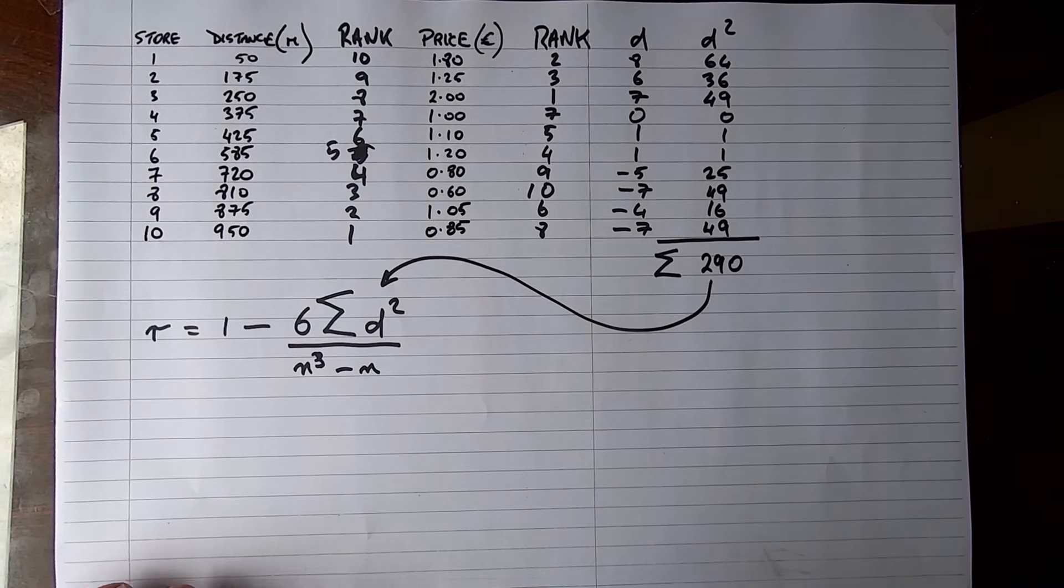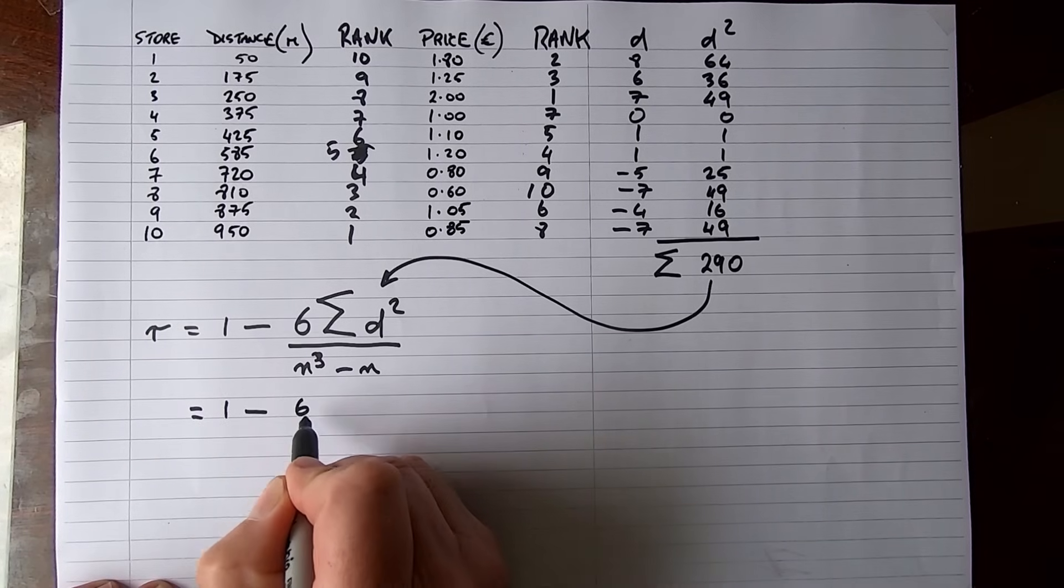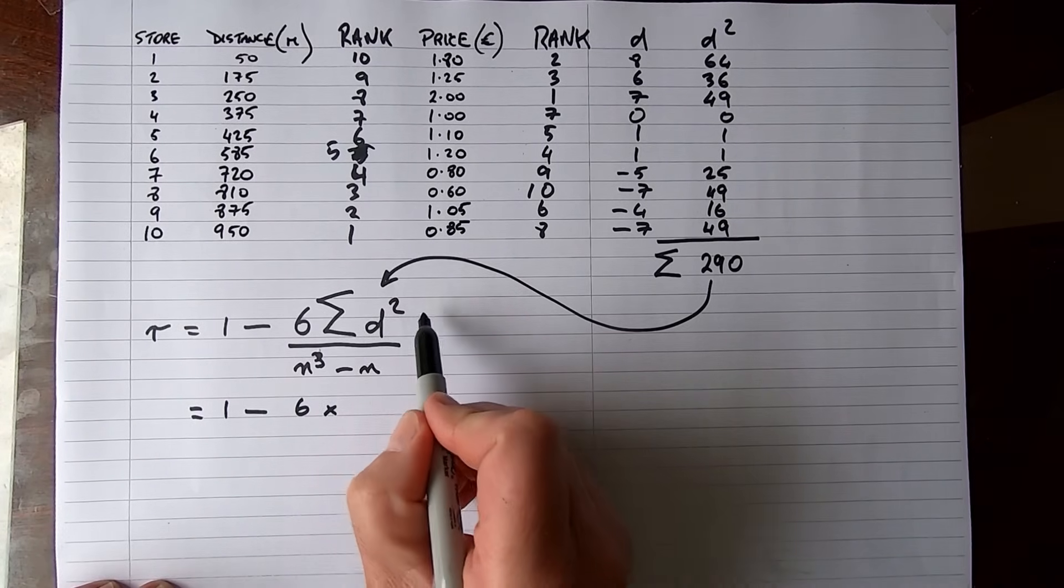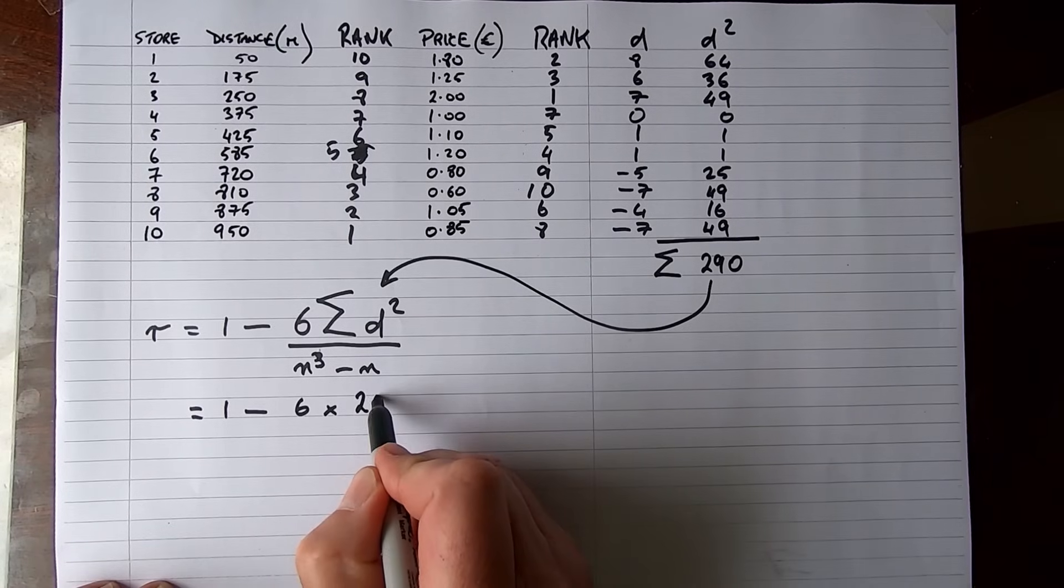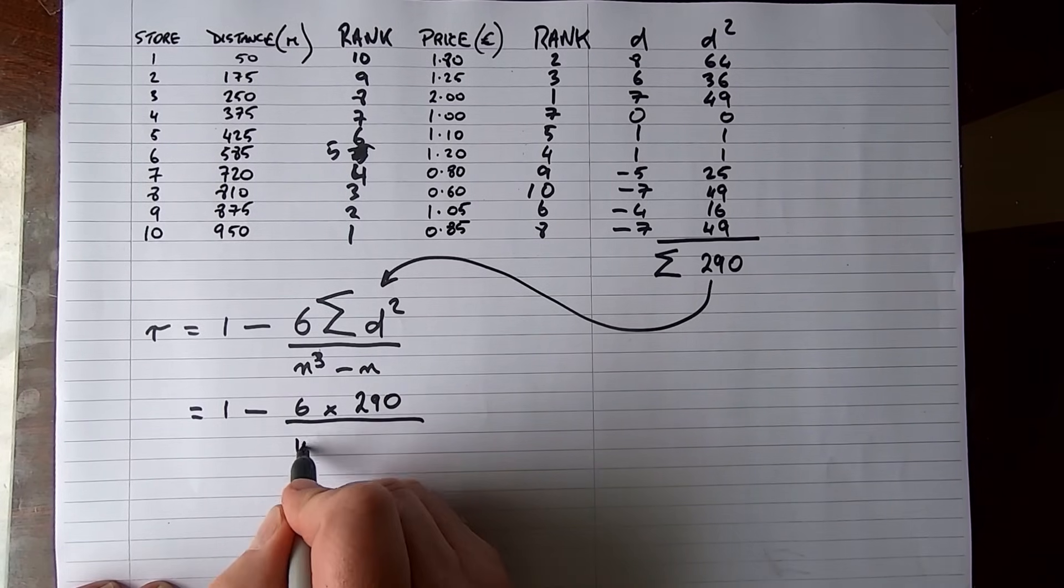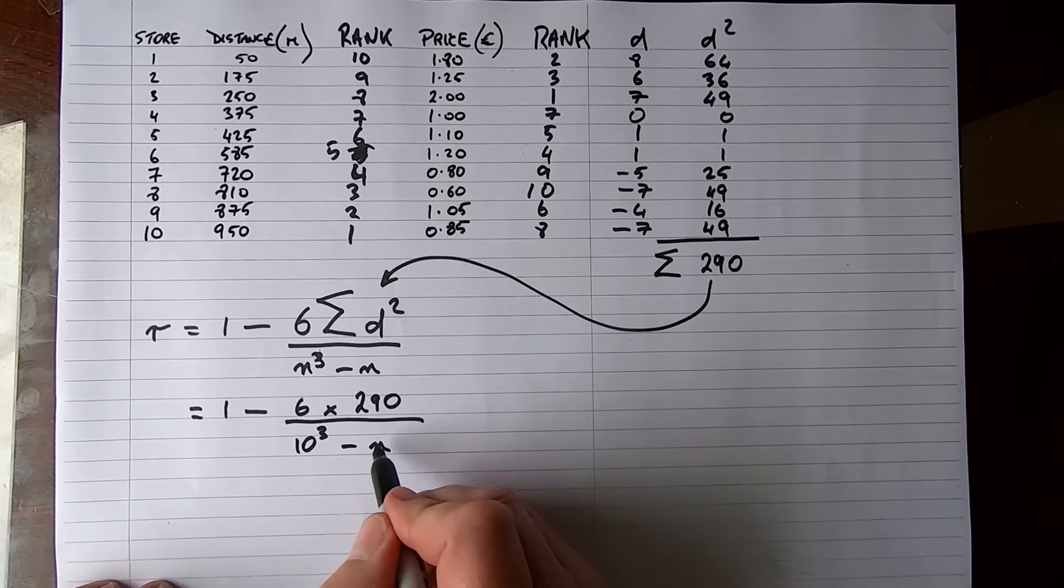So this means we can now write out our formula again. R is equal to 1 minus 6, I'm going to put in an x here to indicate multiplication, times the sum of d squared, which is 290, and we divide that by n cubed, which is 10 cubed, minus n, which is minus 10.